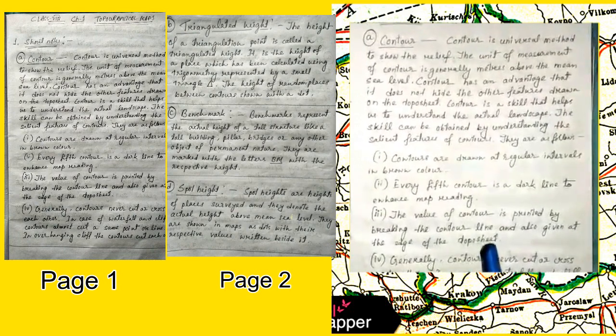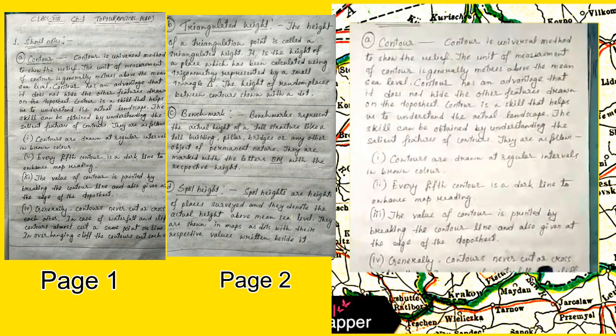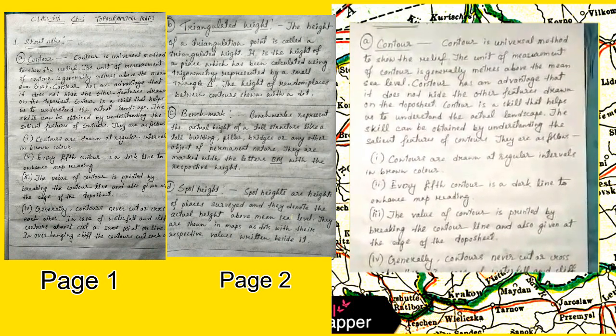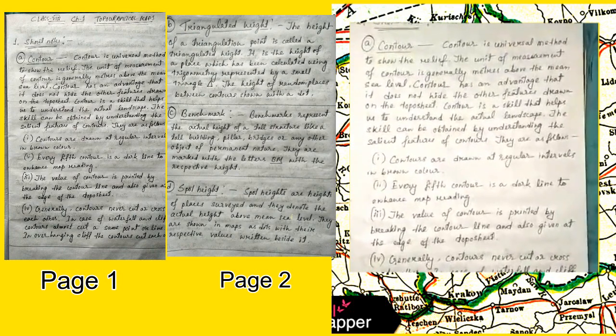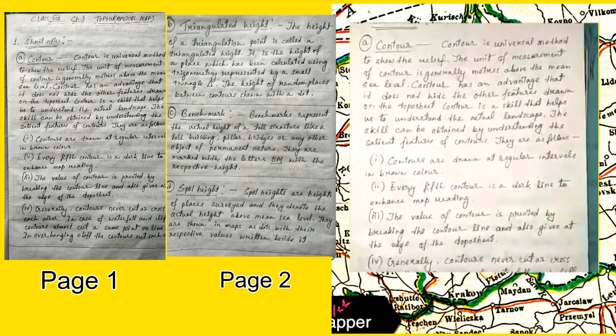Number 4, generally contours never cut or cross each other. In case of waterfall and cliff, contours almost cut at the same point or line. In overhanging cliff, the contours cut each other.